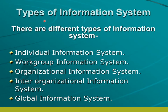There are different types of information system: individual information system, work group information system, organizational information system, inter-organizational information system, and global information system.